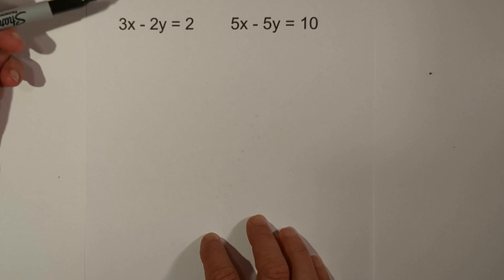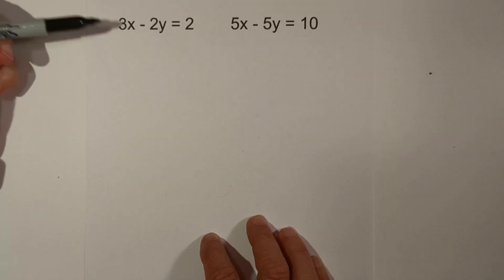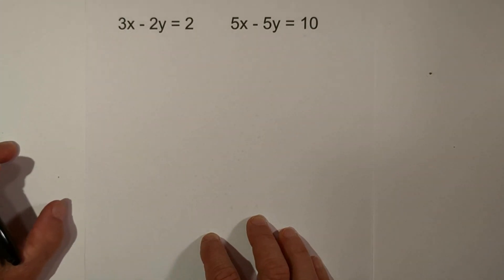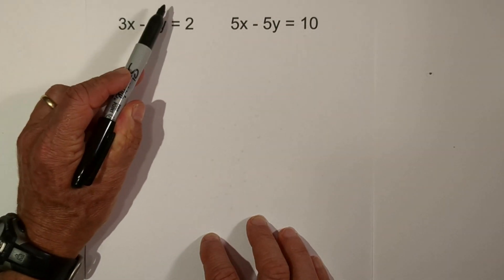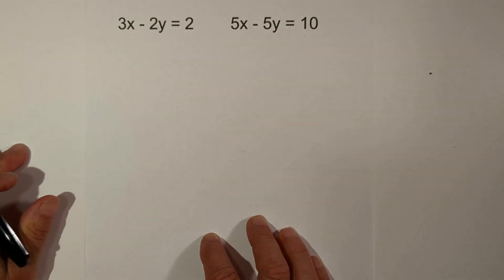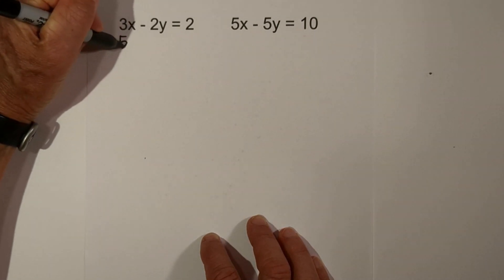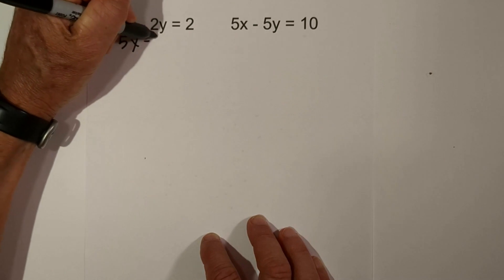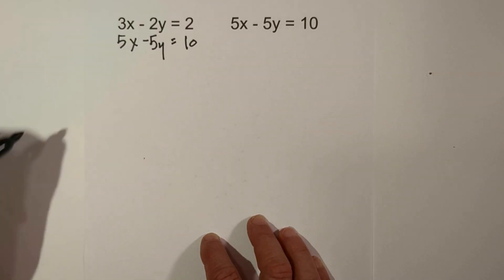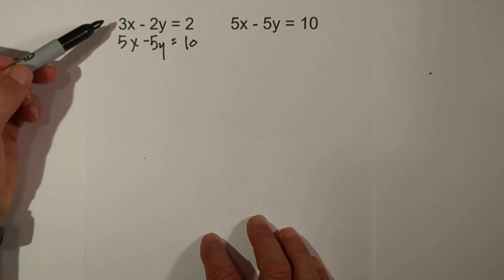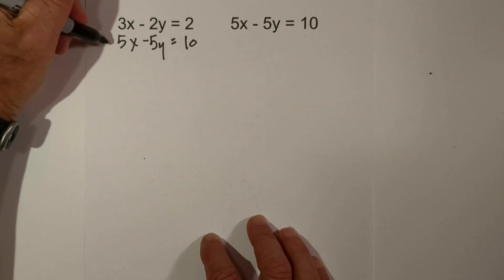Let's work another example. With this example, we're going to have to multiply both equations by a number so we can cancel something out. It is already in the correct form ax + by = c. I'll move one equation underneath, giving us 5x minus 5y equals 10.